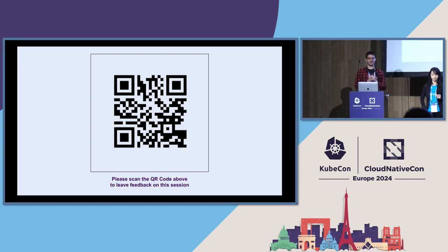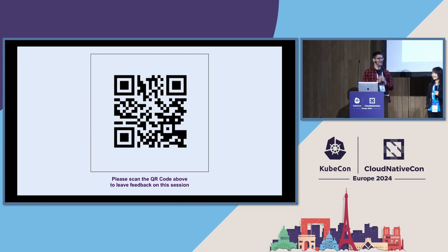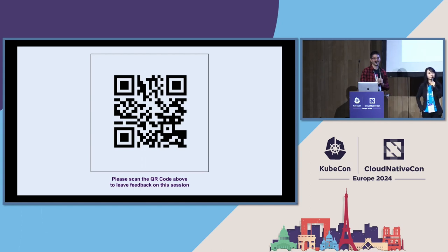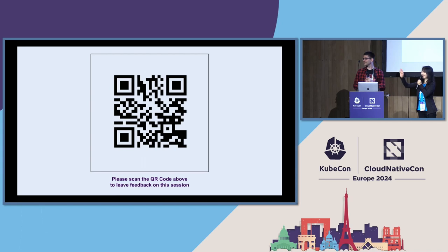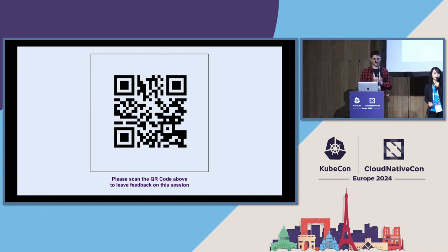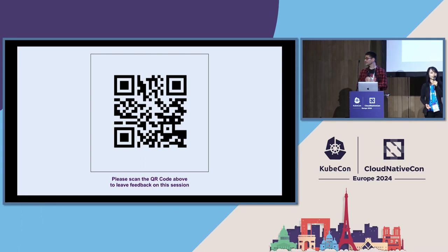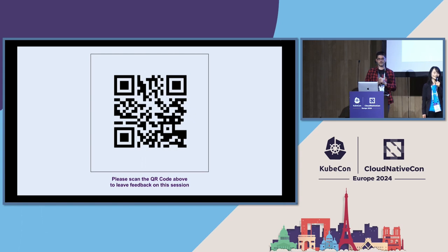COSI remains in alpha because we need volunteers. We actually have weekly meetings — if you are interested, please join. We need people to work on it. Matthew is working on adding E2E tests for the test plan, and Blaine is working on updating the KEP and filling out the production readiness review — all steps needed to move COSI to beta.